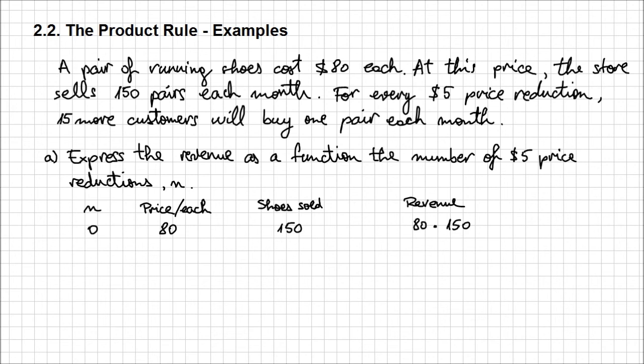Now let's use the rest of the information given in the problem. For every $5 price reduction, n would be 1 — one price reduction. Then the price per unit is going to be 80 minus 5. I'm going to write it like that rather than compute it, so we can visualize what happens with each price reduction.